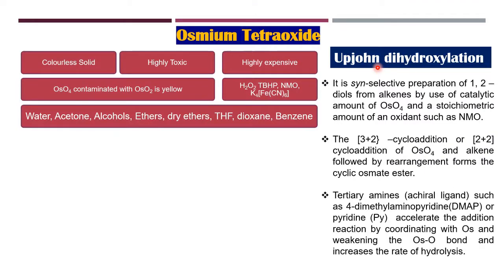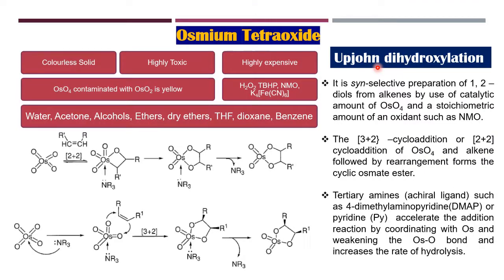Regarding the mechanism: osmium tetroxide can undergo a 2+2 cyclic addition reaction with the alkene giving an intermediate, which then rearranges to give the cyclic osmate ester. The trialkyl amine is lost and this particular ester undergoes hydrolysis to give the syn selective 1,2-diol.